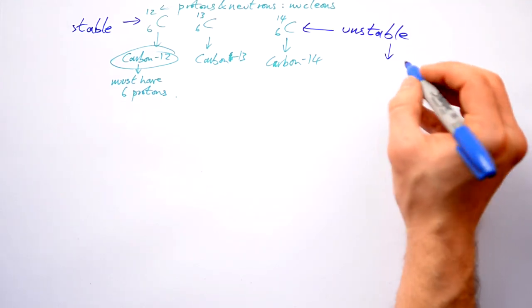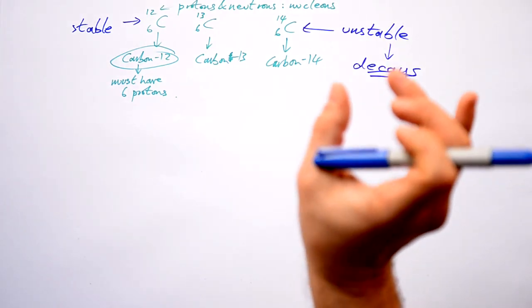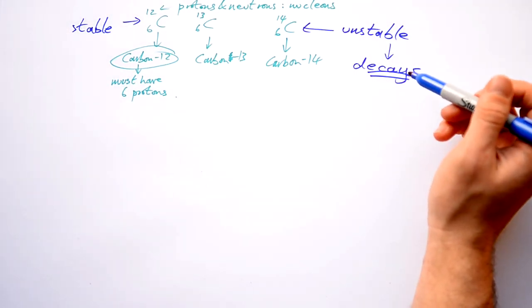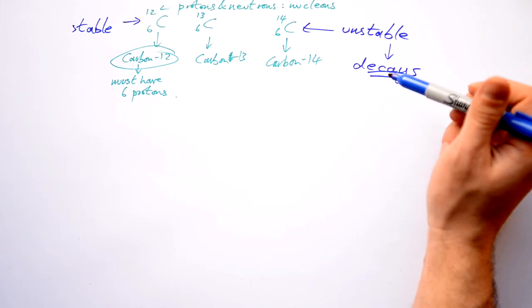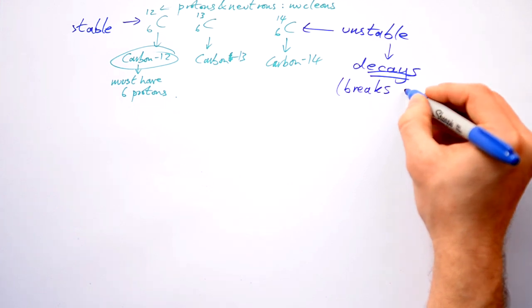Carbon-14 is unstable. It likes to decay. Just think about you building a Jenga tower and you're adding on one more piece, one more piece. The more you do it, the more unstable it becomes. Similar with atoms and neutrons. When something decays, we mean it breaks. Breaks down.